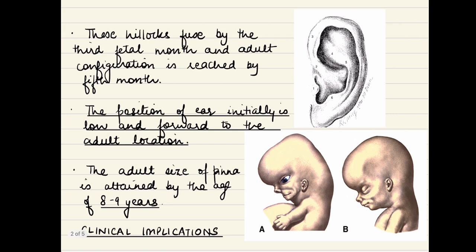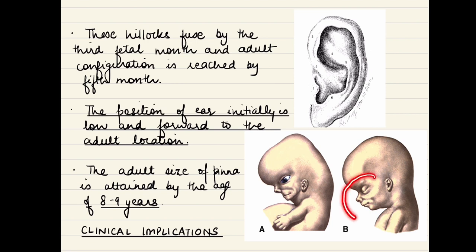Initially, the pinna is very low and lateral in location compared to the developed face. But with growing age, the facial components enlarge and the ear reaches its normal position. Importantly, there is no actual ascent of the pinna; the relative ascent is due to development of the facial structures. The adult size of the pinna is attained by around 8 to 9 years of age.